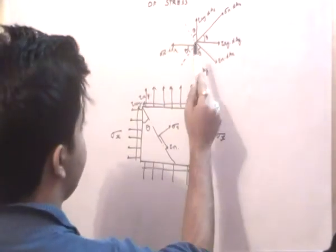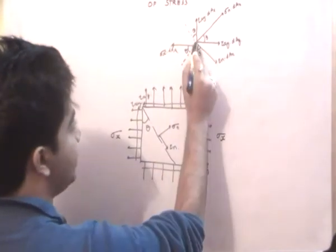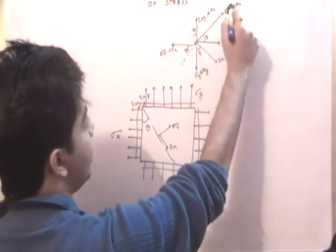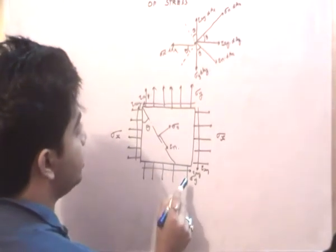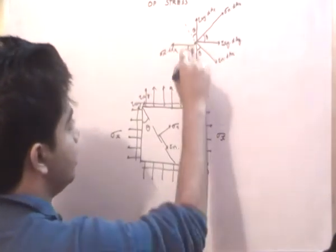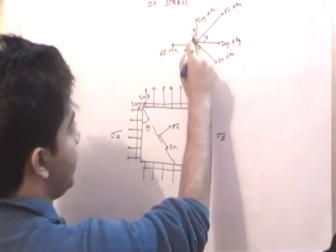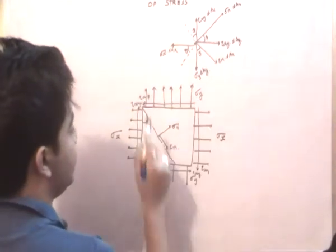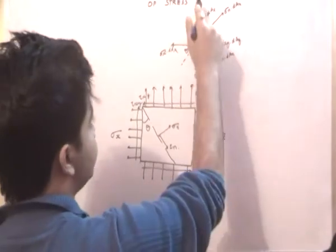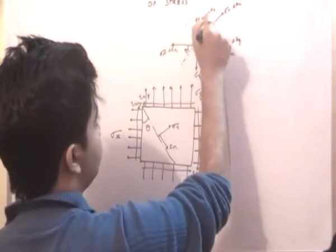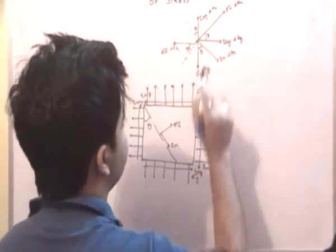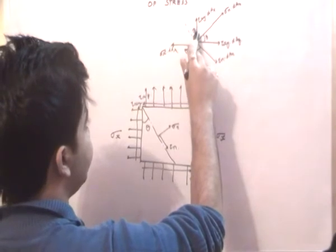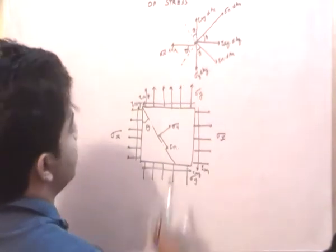If we draw this triangular portion here as a free body diagram, then we have these forces meeting at this point. Sigma n into dA gives me the force in this direction, whereas tau n into dA gives me the force in the other direction. Sigma y into dA, sigma x into dA, and tau xy into dA are also acting along their respective planes. Observe the angles: this is theta, this is 90 degrees minus theta, and so on.